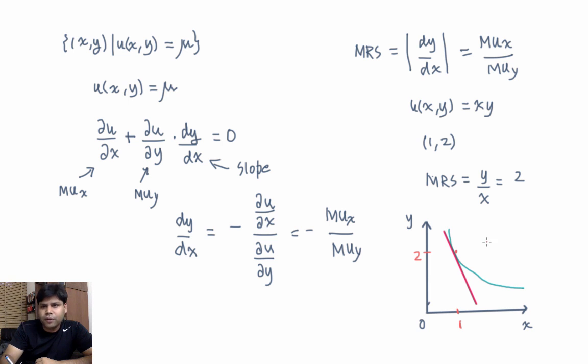So in this video, we have learned how to find the slope of the indifference curve. And we have learned what we mean by marginal utility. Marginal utility is a partial derivative of utility function with respect to x. In the next videos, we will see how to solve consumers problem. Thank you.